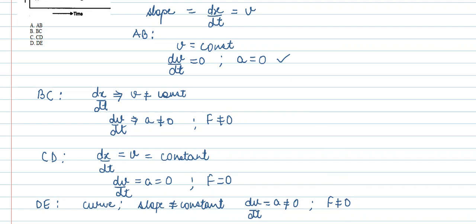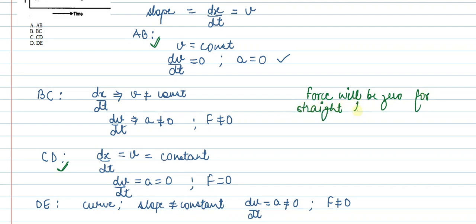So we have two options where the force is zero: region AB and region CD. Force is zero for straight lines in an x-t graph. Looking at our options, option A and option C are correct. This was the solution for this question. Thank you.